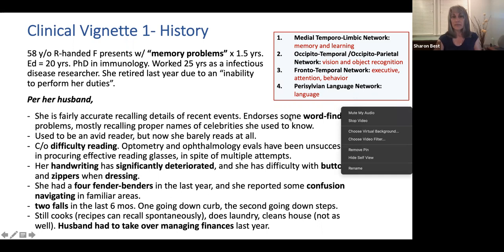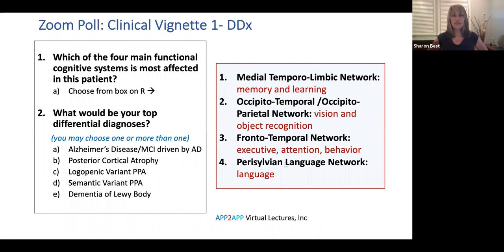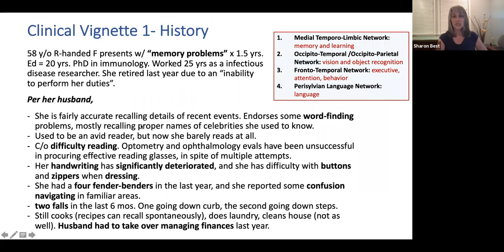The first polling question is: which of the four main functional cognitive systems would be most affected in this patient? Looking at our patient — she's having problems reading, she can't see well, she's been to optometry and ophthalmology, she's having fender benders probably because she can't see while driving, she's had a couple of falls, and she might not be doing finances because she can't see the detail. So the answer is occipital-temporal or occipital-parietal.